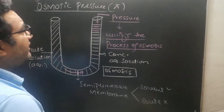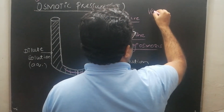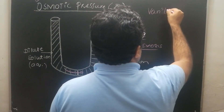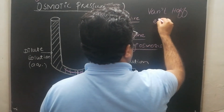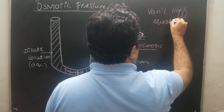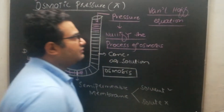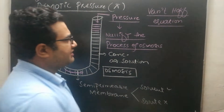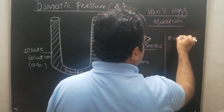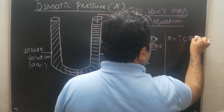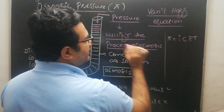Now, how can we calculate the osmotic pressure? There is a formula called the Van't Hoff equation, which is used to find the osmotic pressure. According to this equation, osmotic pressure π is equal to iCRT, where π is the osmotic pressure and i is called the Van't Hoff index.